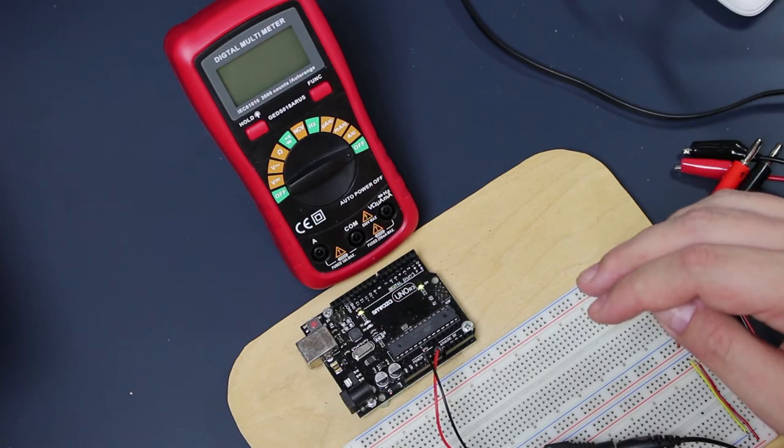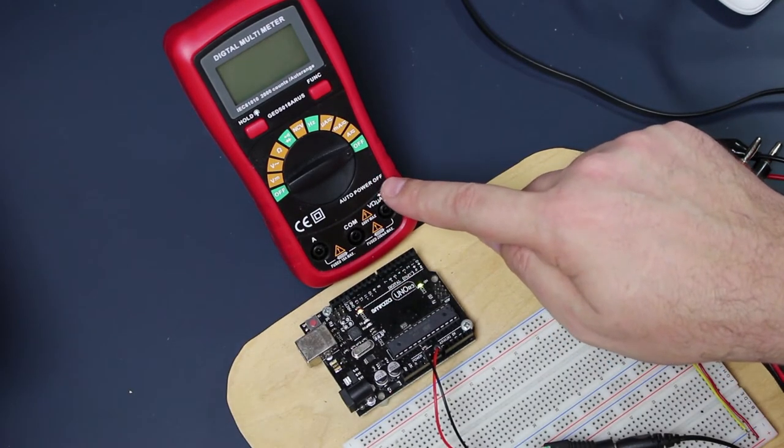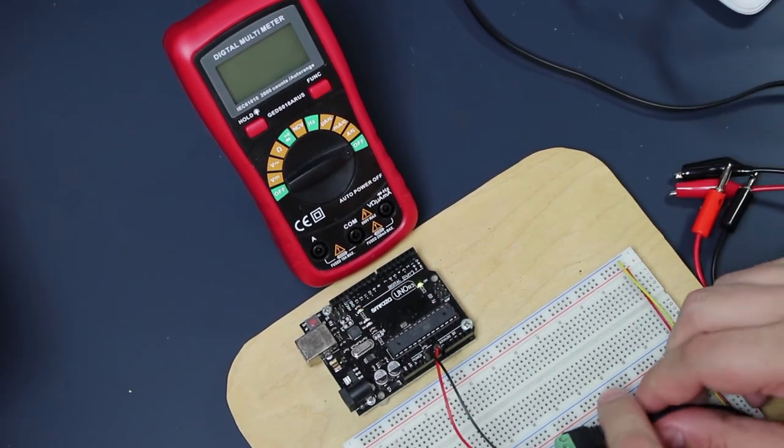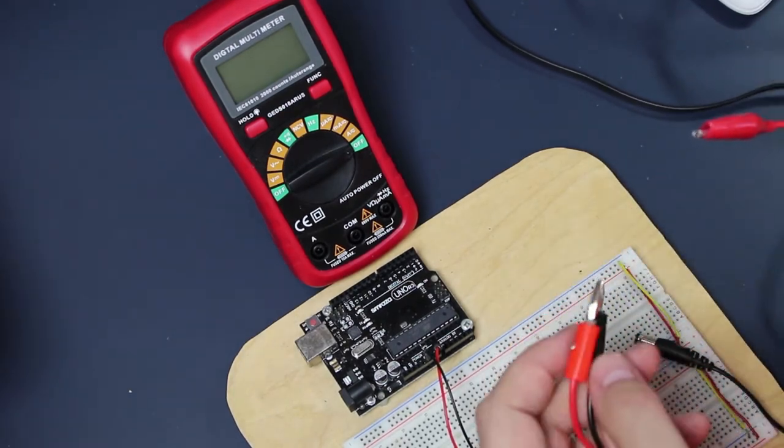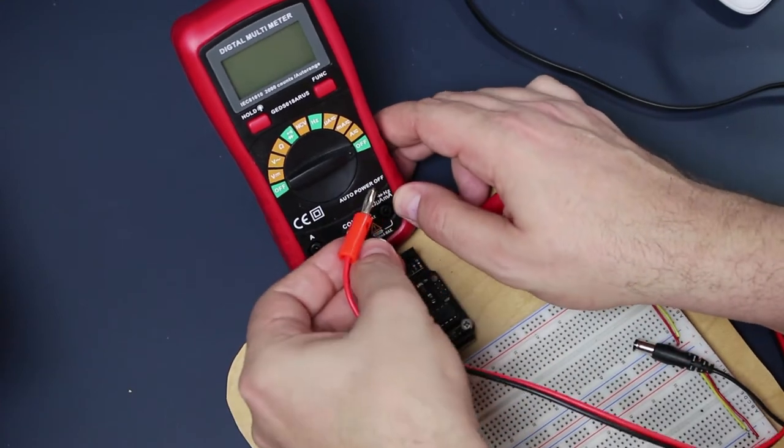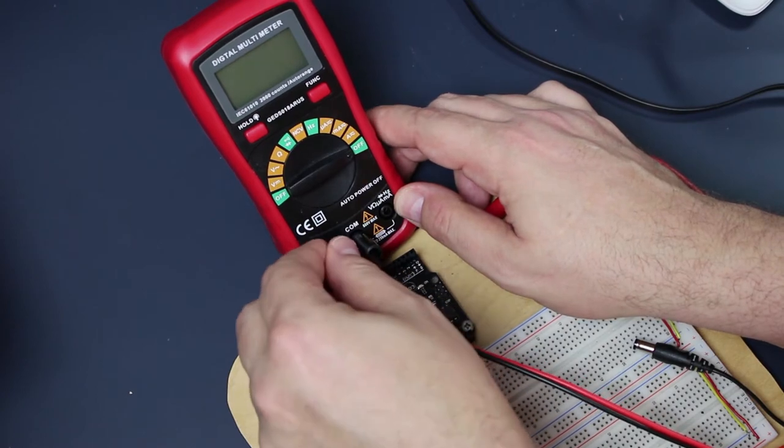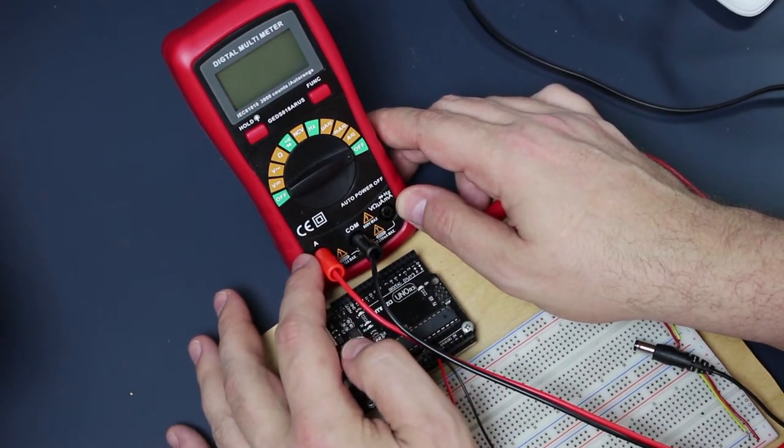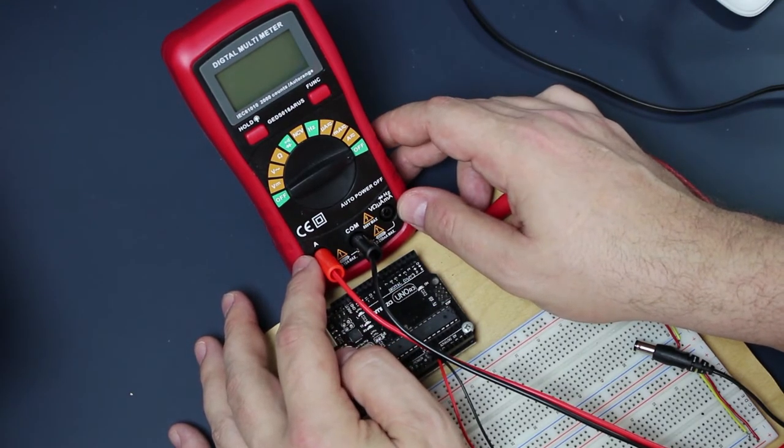The next step, what we're going to do is put this multimeter into the loop. How we do that, let's take the power off for a sec. Take the black lead, goes into the common ground. The red lead goes to the amps. I always choose the highest one, just to make sure that by accident I don't burn out my multimeter or damage stuff.